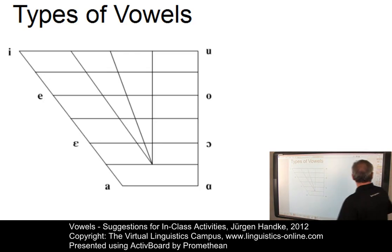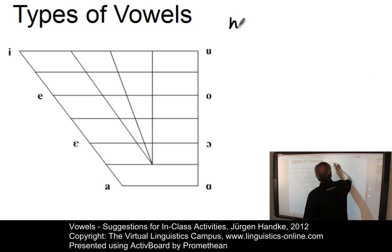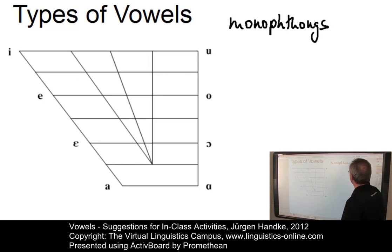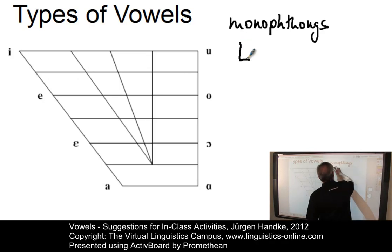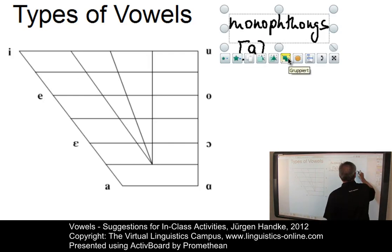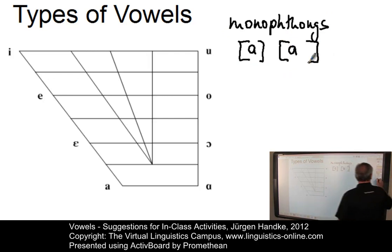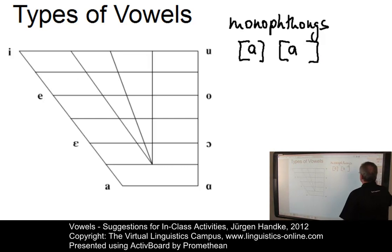One type has already been implicitly used and that is of course the monophthongs. I always mention that an important part of the word 'monophthongs' is the fact that it contains two H's. Here is a monophthong. You could tell your students that we can draw a distinction between two types of monophthongs — long and short ones — and they should know that long monophthongs receive the colon as an extra length mark.